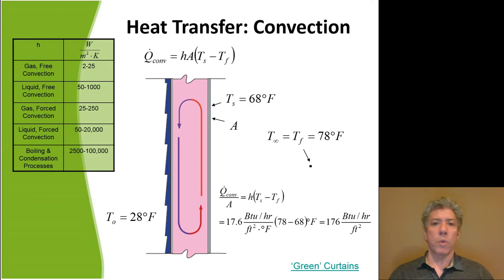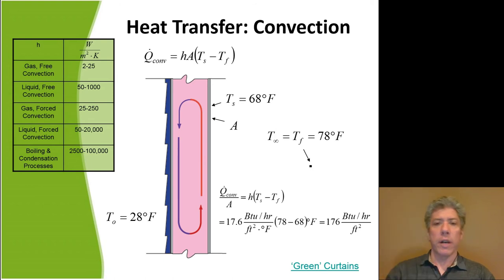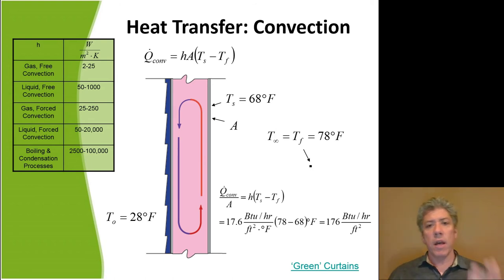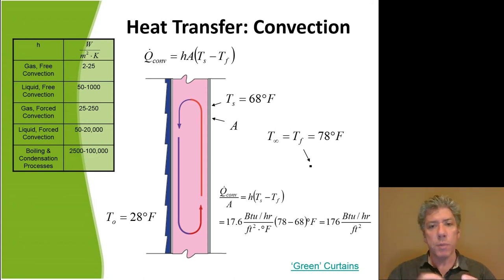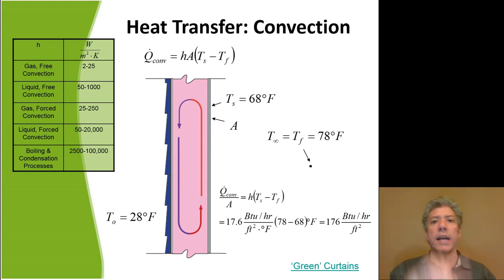The typical range of convective heat transfer coefficients for a gas will be from about 2 to 25 watts per square meter per Kelvin — just a ballpark starting point. Free convection is where the gas moves because as it warms it becomes more buoyant and rises, bringing in colder gas to set up what's called a convective loop.